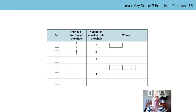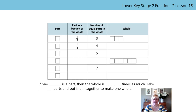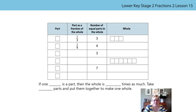Here's a practice activity to complete independently. This time the part is a square. In the second column you write what fraction of the whole it represents, in the third column the number of equal parts it would take to make the whole, and in the final column you draw the whole. Remember each part will be a square. Use the stem sentence: if one blank is a part, then the whole is blank times as much - take blank parts and put them together to make one whole. If you want a challenge, choose your own part and build different wholes from different unit fractions. Good luck!